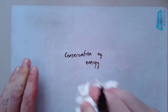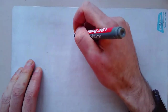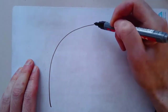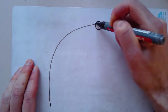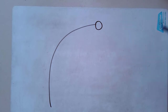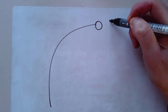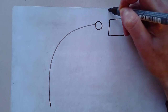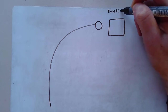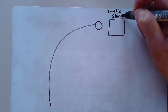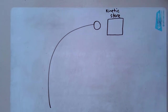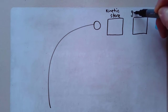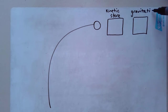So, conservation of energy. Let's say we have a tree, and this is the branch of a tree. At the end of the branch is some kind of fruit — let's say an apple. Now the apple isn't going anywhere, so if we were to draw a box to symbolize its kinetic energy store, it would be empty. It's high up though, so if we were to draw a box for its gravitational store, it would be nice and full.